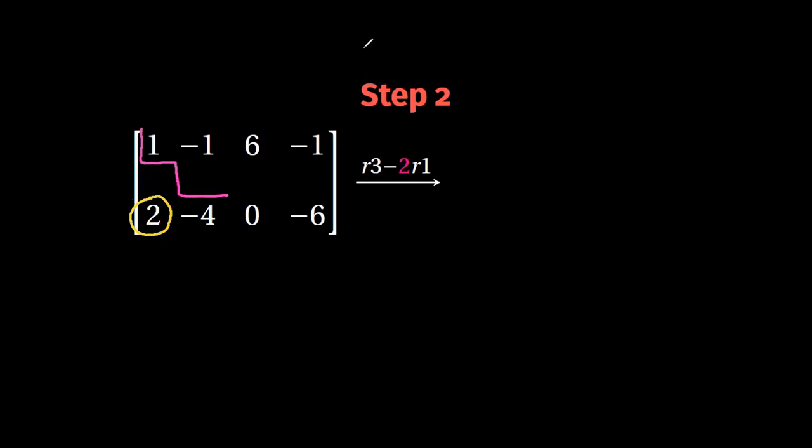So let's do it step by step. First, we need to do two minus two times one, which is, of course, equal to zero. It's what we wanted. Then we have minus four minus two times minus one, which is equal to minus two.